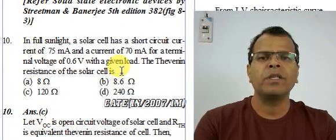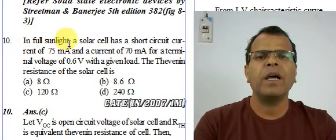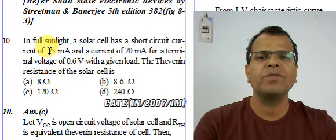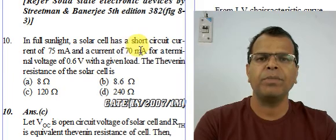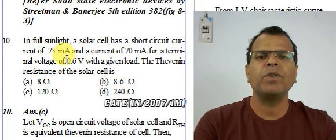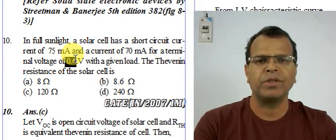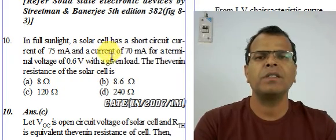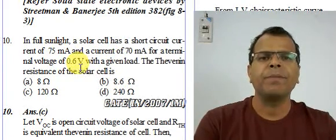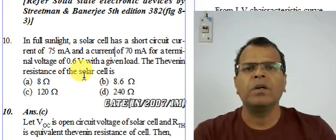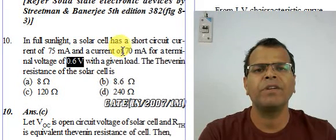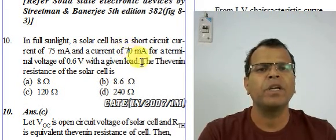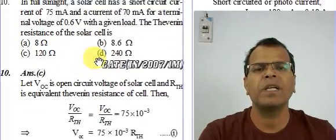Now the next question: in full sunlight, a solar cell has a short circuit current of 75 milliamperes and a current of 70 milliamperes for a terminal voltage of 0.6 volt. The terminal voltage is given and the current is given. Short circuit current is 75 milliamperes, and at a voltage of 0.6 volt it is 70 milliamperes with a given load. We need to find the Thevenin resistance of the solar cell.